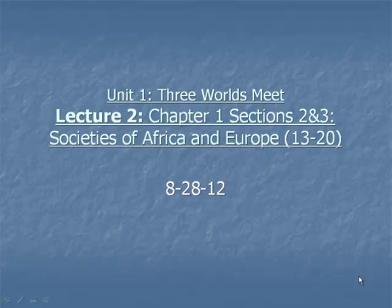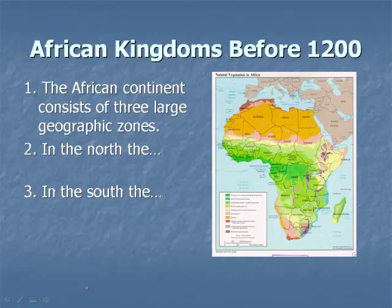Hello and welcome to the second lecture for Unit 1. This lecture we are going to look at two sections of Chapter 1 together, scrunching them down into one lecture. We're going to be looking at the societies of Africa and the societies of Europe. Let's start with African kingdoms before the year 1200 A.D.